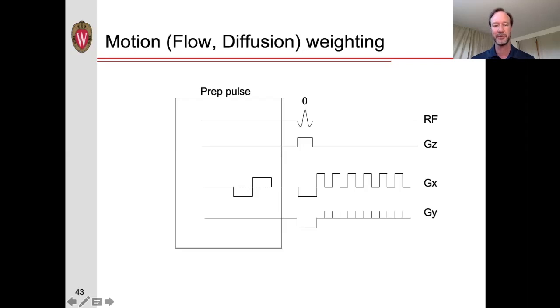And you might think, well, what does that really do? Well, if your spin is perfectly stationary, then the spins or the magnetization vectors get twisted up, and then untwist it by exactly the same amount in this second lobe.